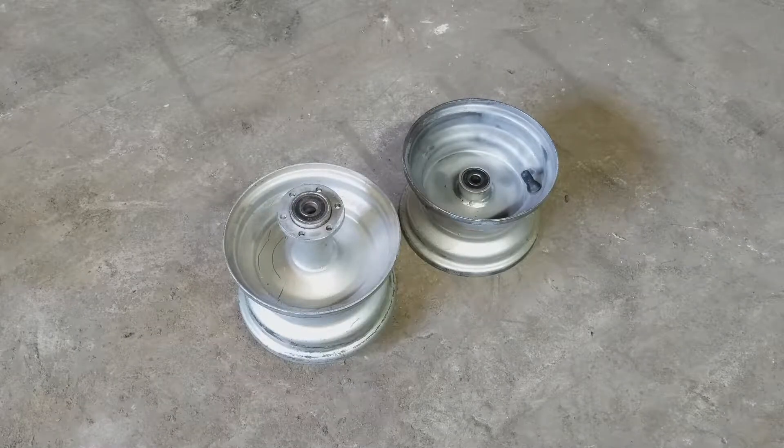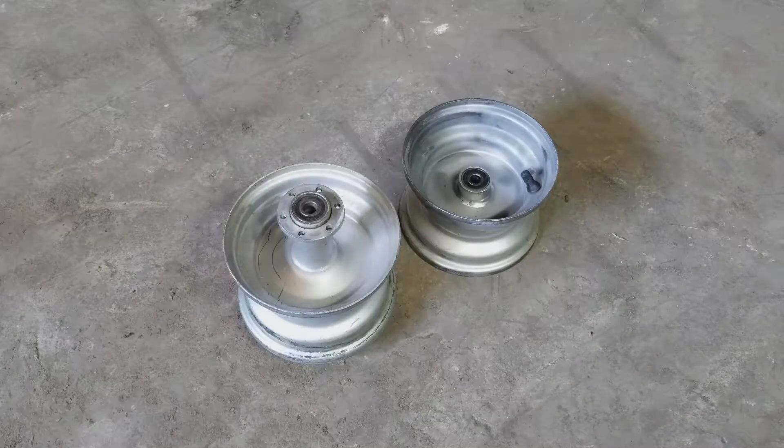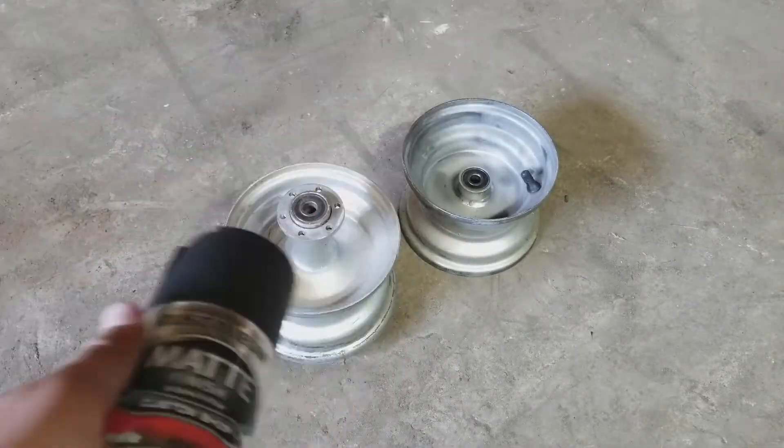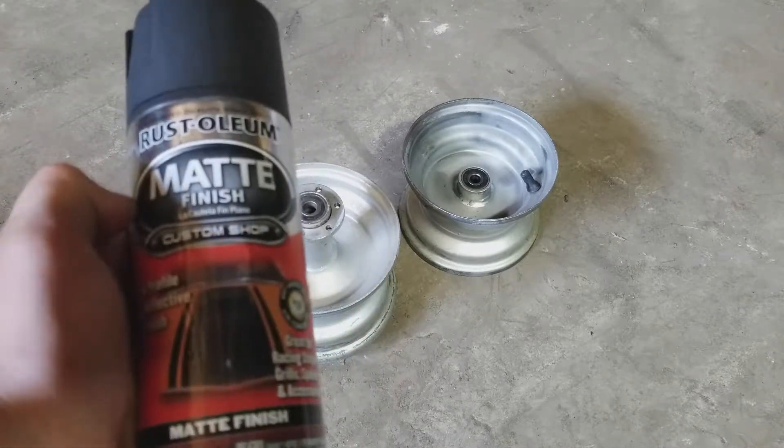So the color I chose is matte black right here. I'm going to be adding two coats of primer and then three coats of matte black. So yeah, let's get started.